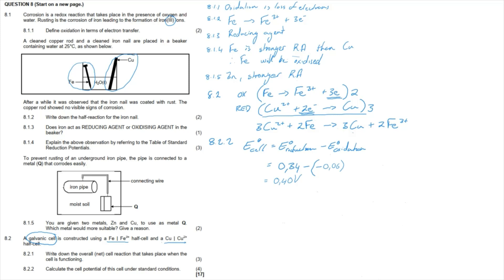Marking guidelines: 8.1.1 — two marks for stating oxidation is a loss of electrons. 8.1.2 — one mark for correctly showing Fe → Fe³⁺ + 3e⁻; note it cannot be written as a reversible reaction or a mark is lost. 8.1.3 — one mark for stating iron is a reducing agent because it is oxidized. 8.1.4 — one mark for stating iron is a stronger reducing agent than copper. 8.1.5 — one mark for identifying zinc as the correct metal because it is a stronger reducing agent than iron.